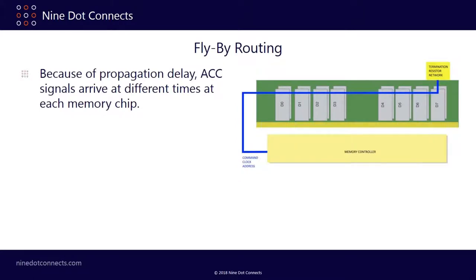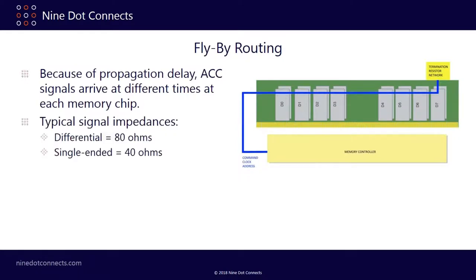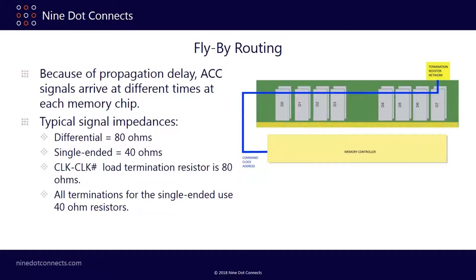In the daisy chain process there's going to be propagation delay as signals go from chip to chip, and we'll have to account for that. All command and address lines are single-ended with 40-ohm impedance. The differential master clock is 80 ohms and needs an 80-ohm low termination resistor. In the termination resistor network, 40-ohm resistors are shown for all single-ended signals.